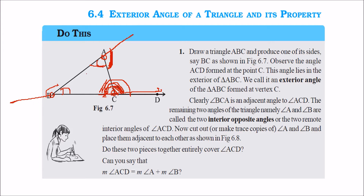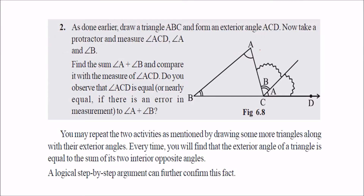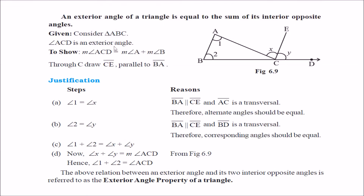One very interesting property is that the exterior angle will always be equal to the sum of the interior opposite angles. We will prove it. The exterior angle will be equal to the sum of interior opposite angles. Let us see how we can prove it.